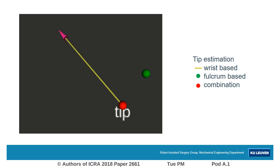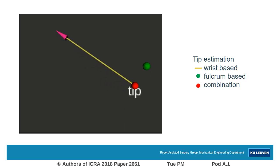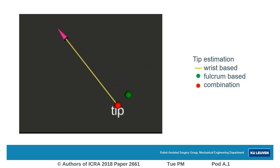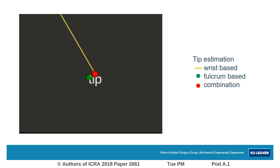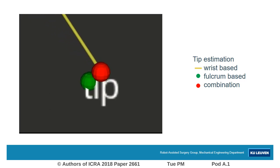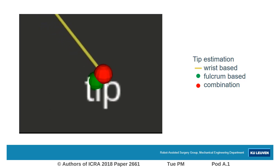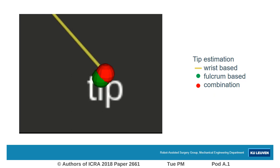In this video, you can appreciate these properties. It shows a slender instrument and a red dot indicating the result of the proposed tip estimation method. We can see that it is very responsive to instrument motion and it does not suffer from the inaccuracies the green fulcrum-based estimate shows. A closer look confirms that the noise in the yellow wrist-based estimate is absent in the proposed red estimate.